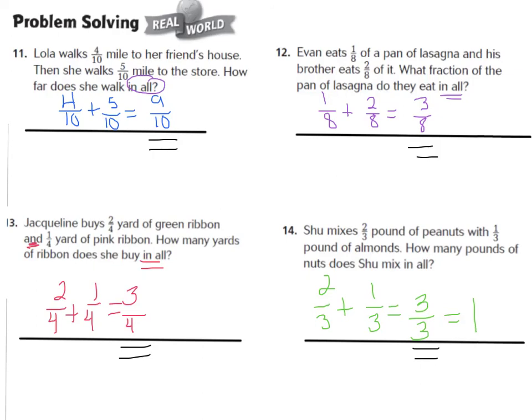Number 13, Jacqueline buys 2 fourths yard of green ribbon and 1 fourth yard of pink ribbon. How many yards of ribbon did she buy in all? So we should have said 2 fourths plus 1 fourths equals 3 fourths. And number 14, Shu mixes 2 third pound of peanuts with 1 third pound of almonds. How many pounds of nuts did Shu mix in all? So we should have had our equation 2 thirds plus 1 thirds is 3 thirds, which is equal to 1 pound. I hope that you got those all right.